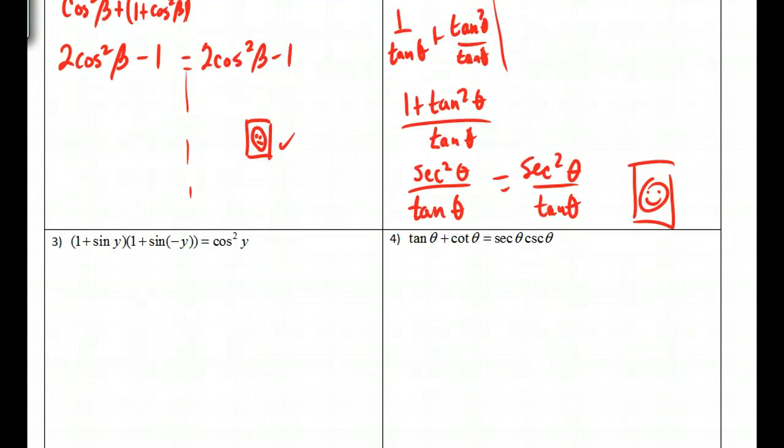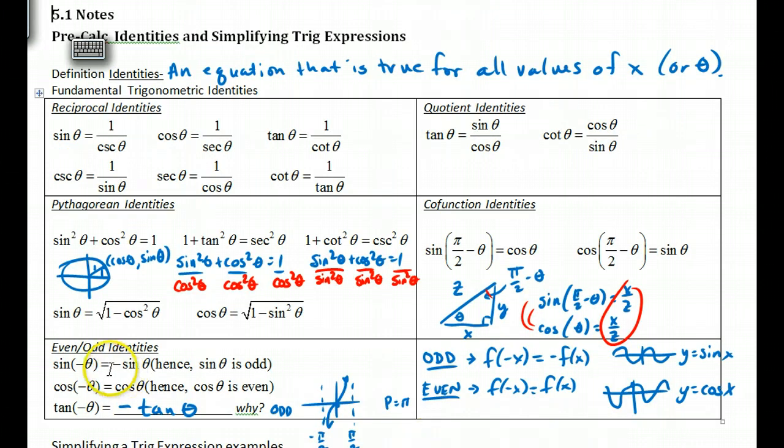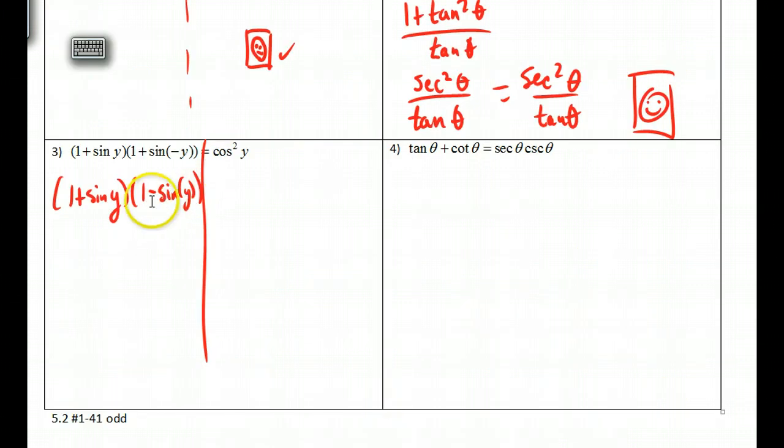What about this next one? There's a couple things going on here. You won't always be working on the left side to get to the right side. Sometimes it's the right to get to the left. If I look at this, I got one plus the sine of y times one. Now what happens here? Is sine an odd function or an even function? It is an odd function. So the sine of negative y is negative sine of y. So I can change this to this. And I can show that to you here, 5.1. Sine of negative theta is equal to negative sine, because that's odd.